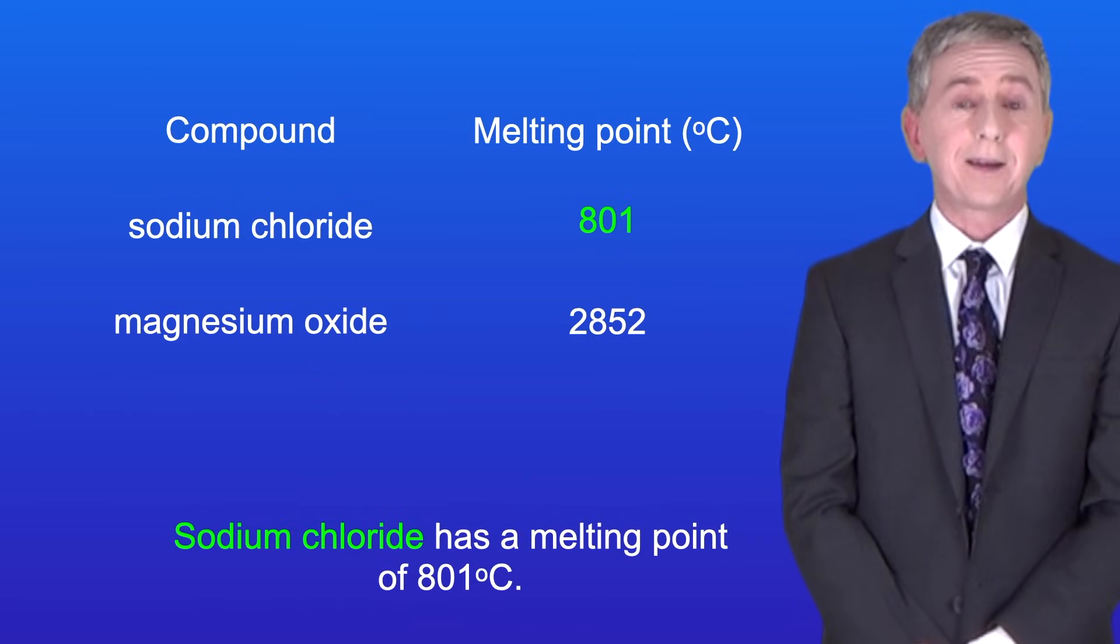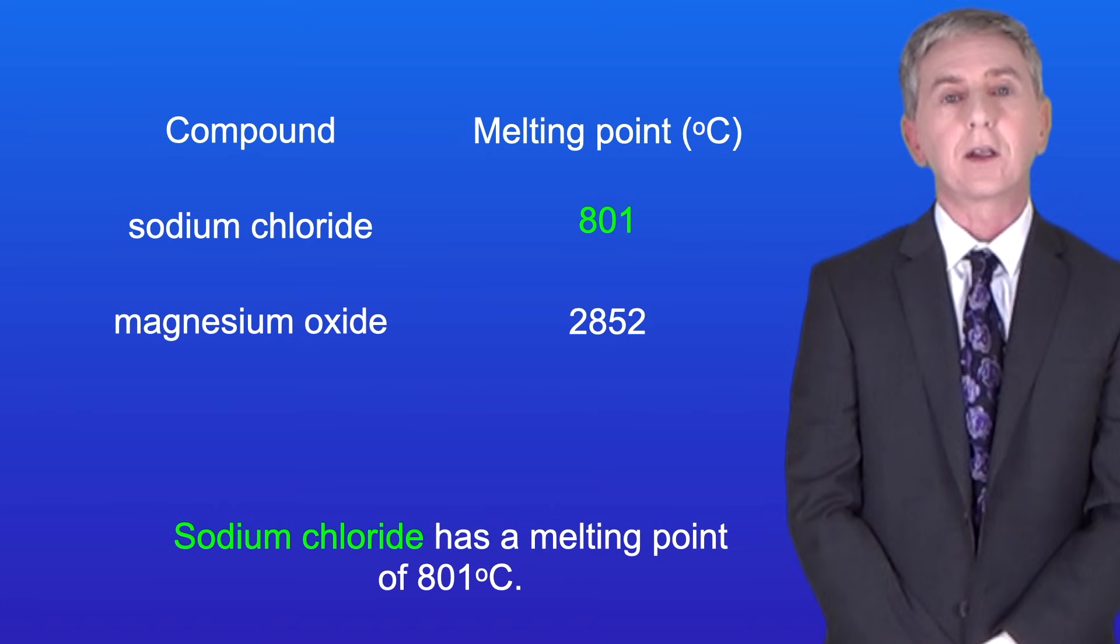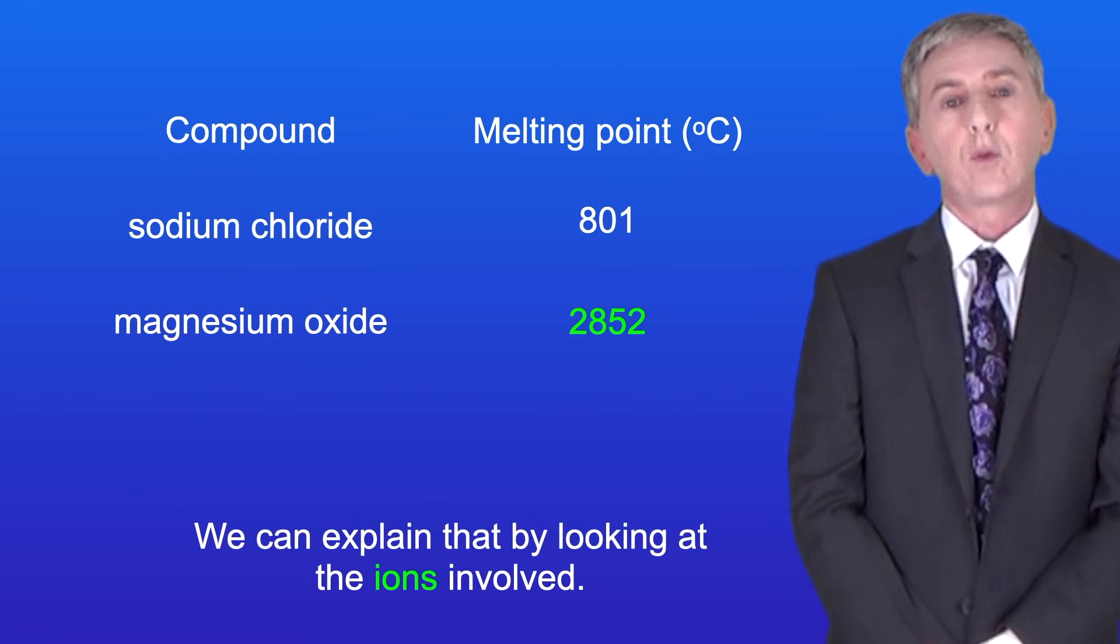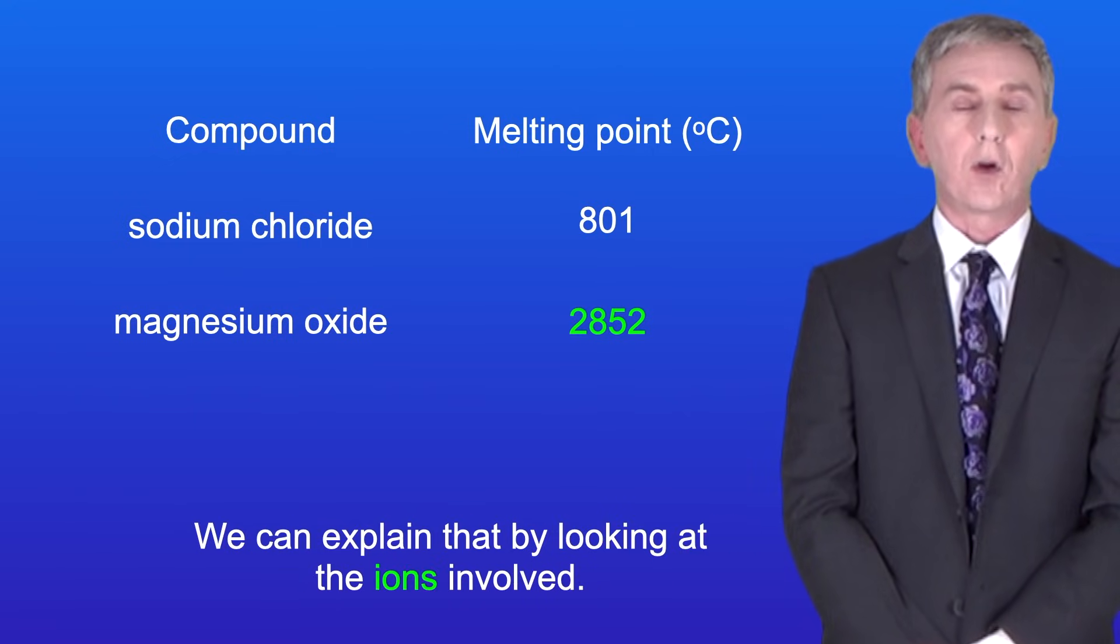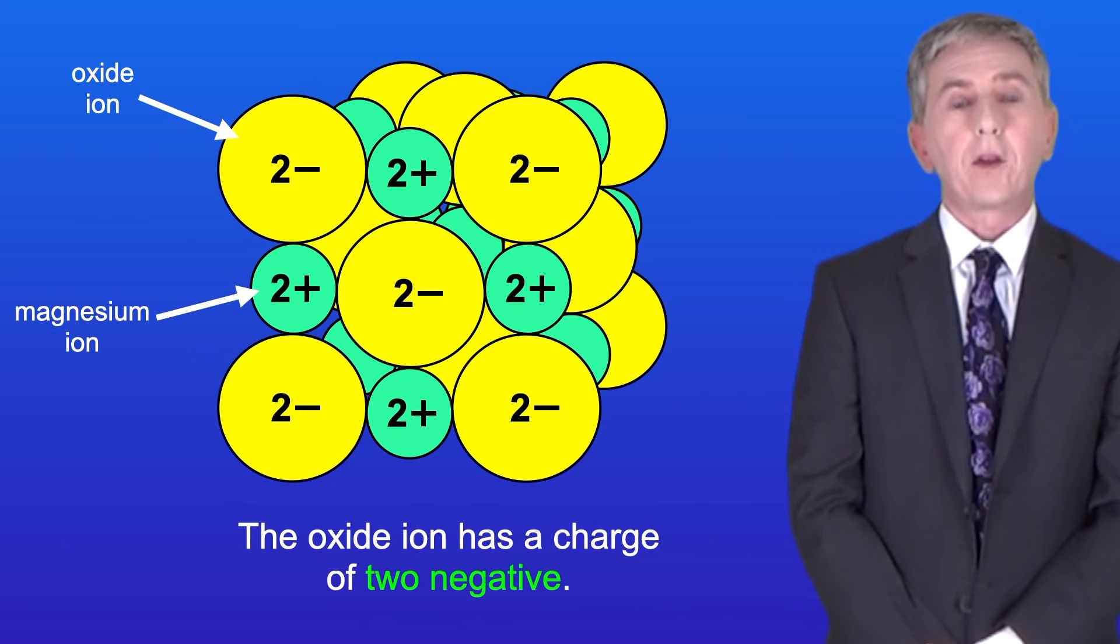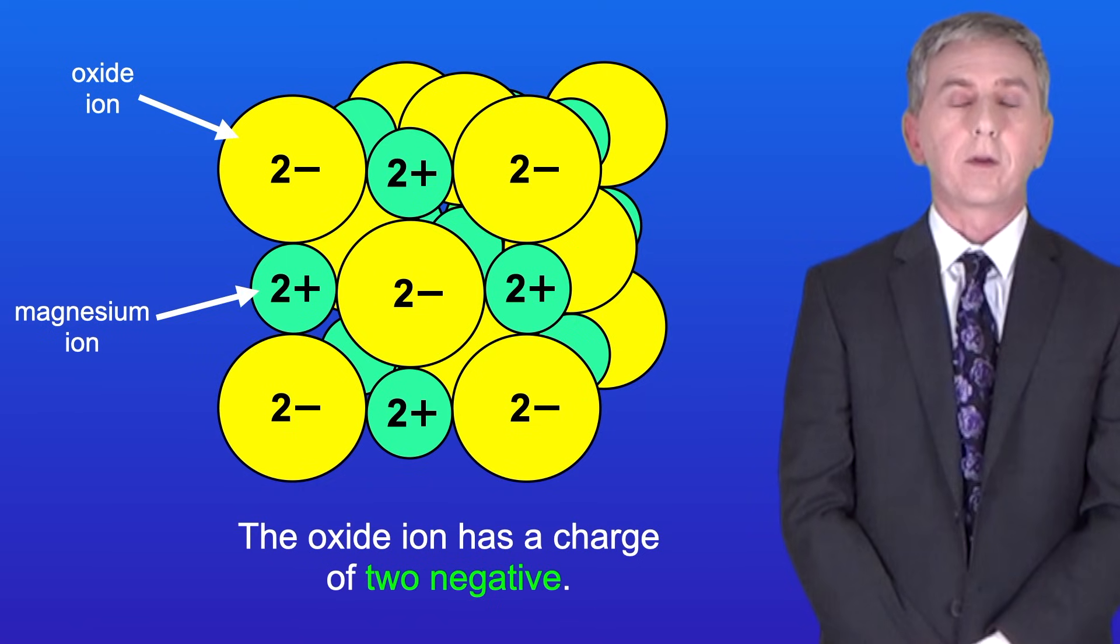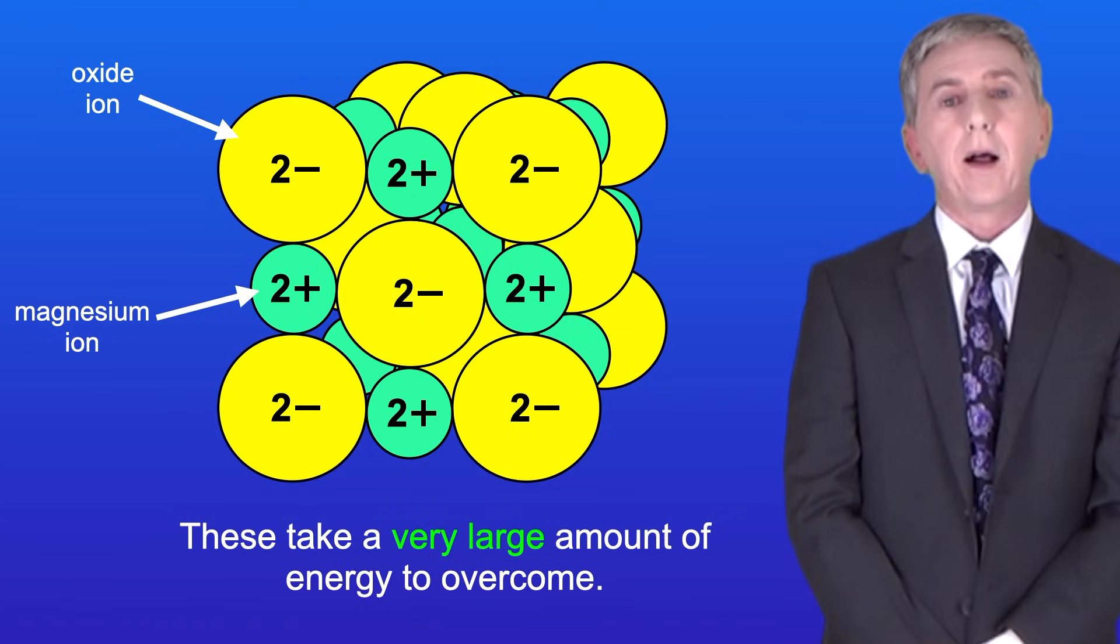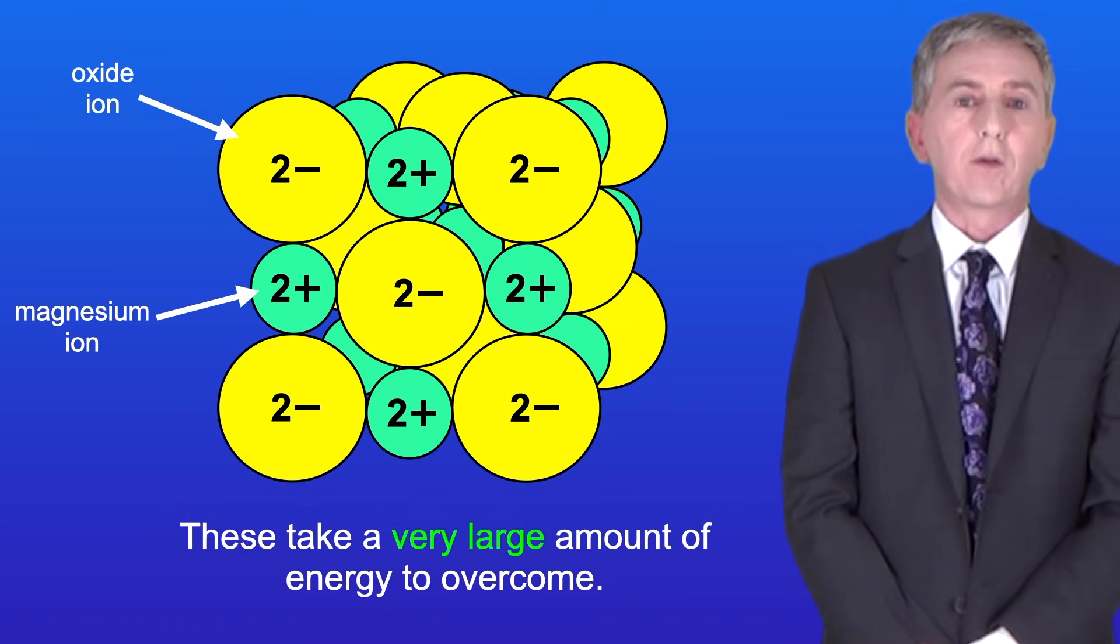Sodium chloride has a melting point of 801 degrees Celsius. The melting point of magnesium oxide is even higher at 2852 degrees Celsius and we can explain that by looking at the ions involved. The magnesium ion has a charge of 2+ and the oxide ion has a charge of 2-. This means that these ions experience very strong electrostatic forces of attraction and these take a very large amount of energy to overcome.